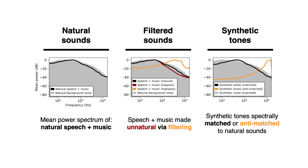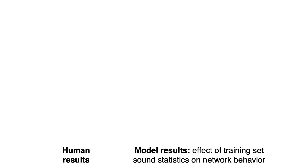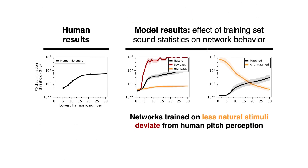You also have to optimize it on natural sounds. If you instead train it on various kinds of unnatural sounds, you get out a system that can estimate fundamental frequency, but does so in ways that deviate from human pitch perception. That suggests that pitch perception is really fundamentally shaped by the demands of estimating fundamental frequency from natural sounds in natural environments.